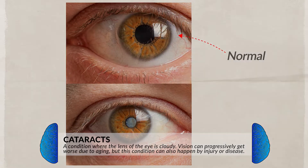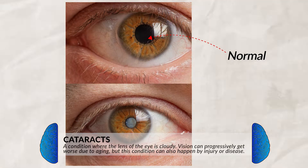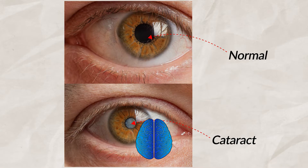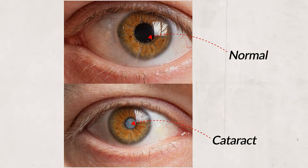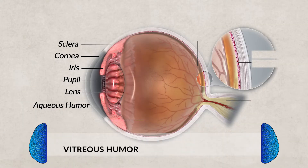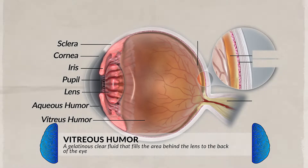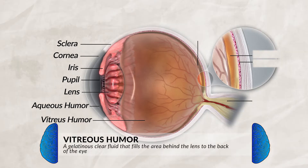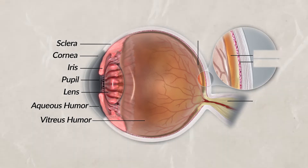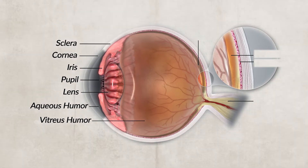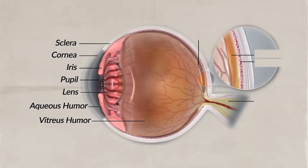One other problem that can occur with the lens is cataracts — the clouding of the lens. It causes your vision to become blurry and will keep progressively getting worse if not treated. Once light goes through the lens, it goes to the vitreous humor, a clear gel-like fluid in the vitreous cavity. It gives the eye support and shape, is transparent so light can pass through it, and is located between the lens and the retina.